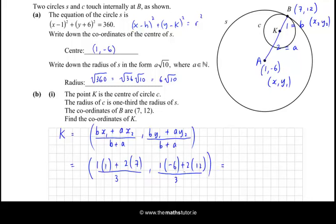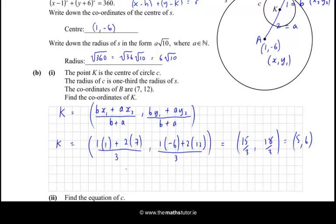And that should give us 1 plus 14 over 3, so that's 15 over 3. And then we get 24 take away 6, which is 18 over 3. So we have (5, 6) is the coordinates of K. So we now have the coordinates of K.